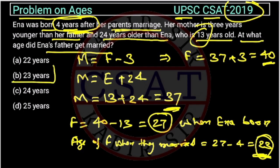So the answer will be option B. The question is easy, but many students get confused by the language. Otherwise there is no complex calculation — we are just doing addition and subtraction. The major task is to understand the question. If you can understand it, you can solve it very easily.